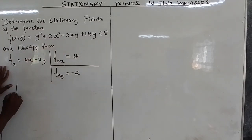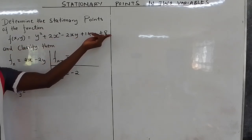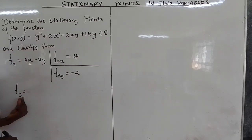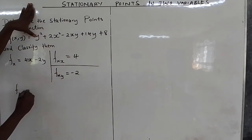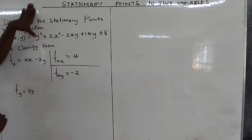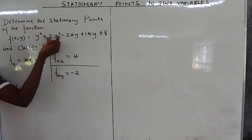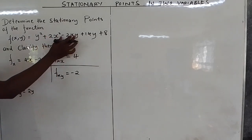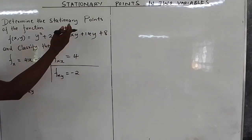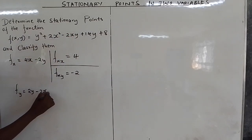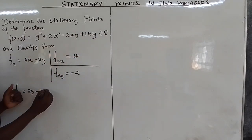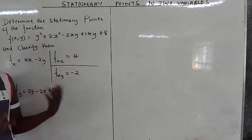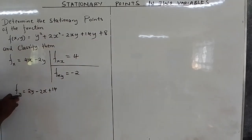Next, we differentiate the original function partially with respect to y. Only y is considered a variable. Differentiating y² gives 2y. The 2x² term has no y, so it's a constant — zero. For -2xy, -2x is a constant, so differentiating y gives 1, leaving -2x. Differentiating 14y gives 14, and differentiating the constant 8 gives 0. So fy = 2y - 2x + 14.